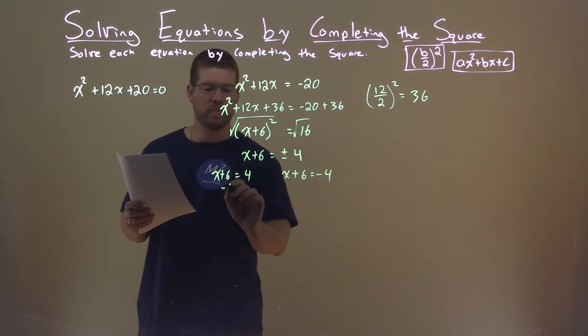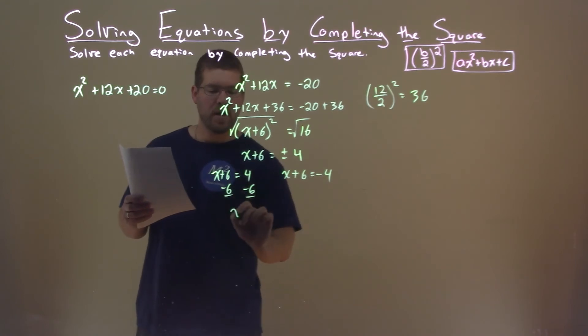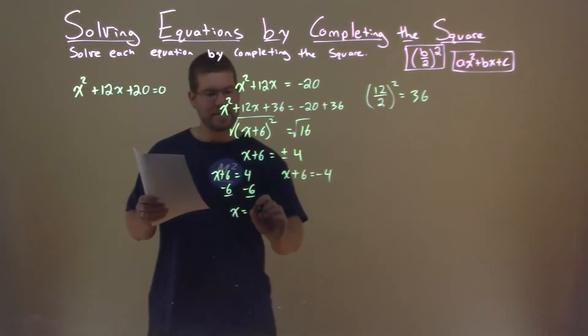We're going to solve both of them. Subtract 6 from both sides, and x equals 4 minus 6, which is negative 2.